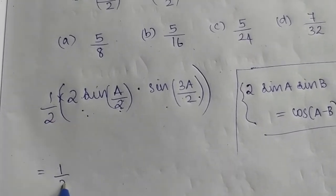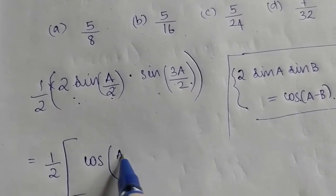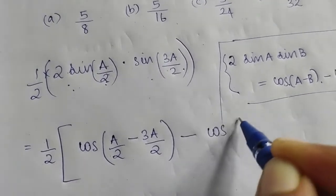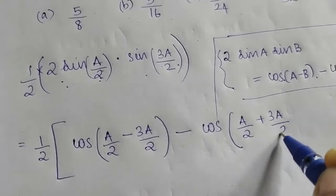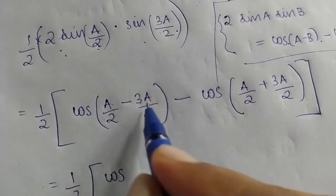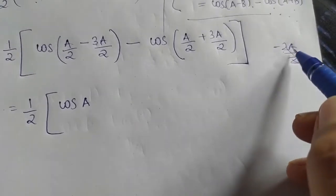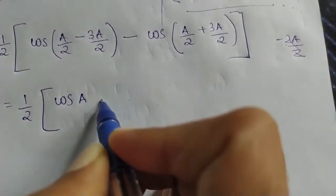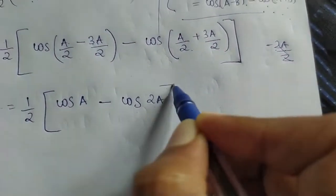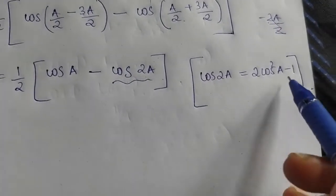We substitute half into half. The formula gives cos(a minus b) where a equals a/2 and b equals 3a/2. Then cos(a minus b) minus cos(a plus b): so cos(a/2 minus 3a/2) equals cos(minus a), and cos(minus x) equals cos x. For a/2 plus 3a/2 equals 2a. Now for cos 2a we use the formula cos 2a equals 2cos²a minus 1.